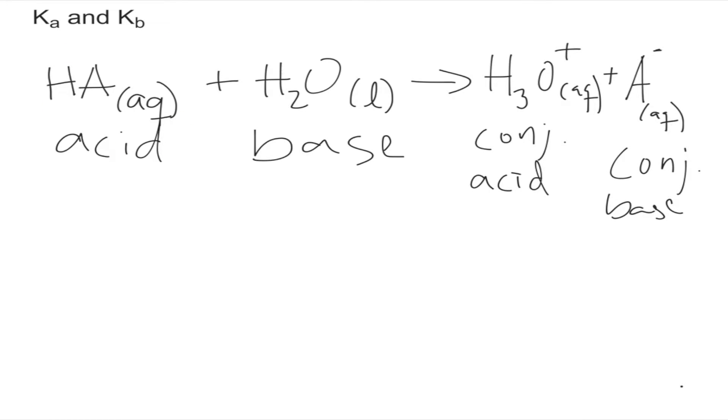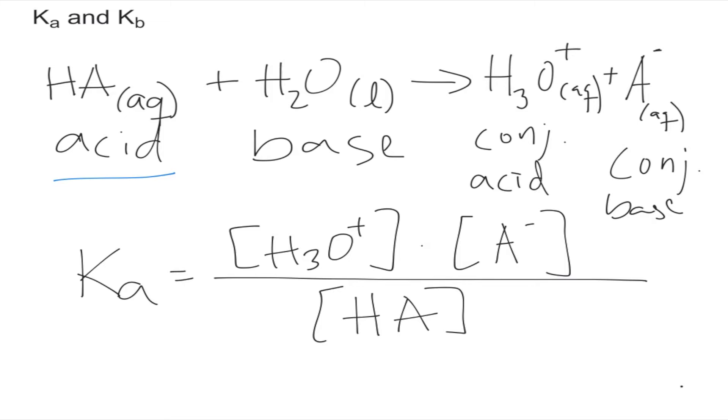Now because we started with that acid HA, we want to find the Ka. Using the same method as before, the Ka will be the products over the reactants. In this case the products are the hydronium ion H3O plus, we find the concentration of that, and the conjugate base A minus. And that would be over the initial acid we have, which is HA. We do not include water because it's a liquid. So this is our acid dissociation constant.